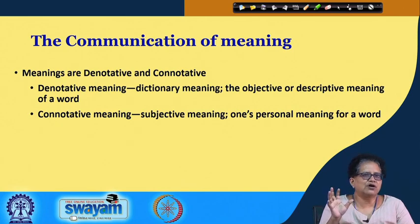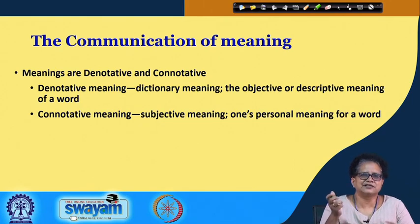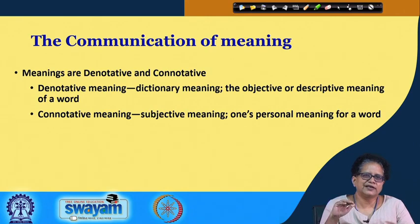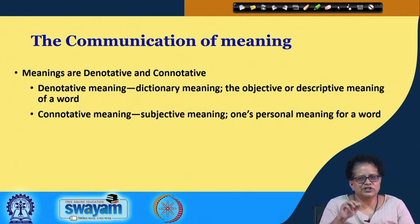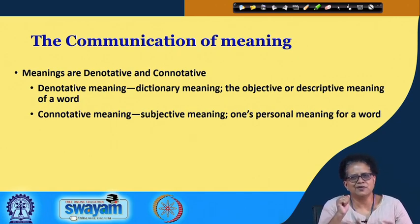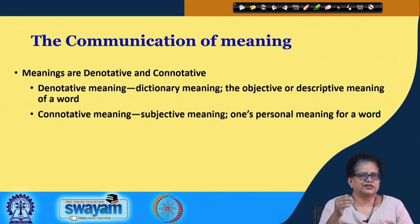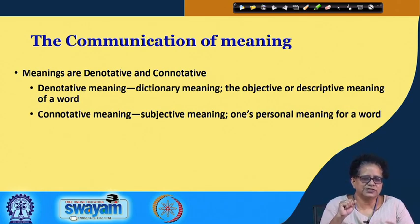The denotative meaning is further defined as the objective or descriptive meaning of a word. A dog or cat is described in the dictionary as a small or large, furry, four-legged, domesticated animal. It is objective because it is not subjective, not personal, and has no emotional attachment to that meaning.